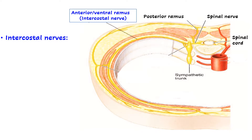What are intercostal nerves? In this picture we can see a cross-section through the thoracic wall — the anterior aspect and the posterior aspect. We can see a vertebral body and within the vertebral foramen there is the spinal cord. From the spinal cord two nerve roots emerge: the ventral or anterior root, which is the motor root, and the posterior or dorsal root, which is the sensory root, along with the dorsal root ganglion. The two roots join together to form the spinal nerve.